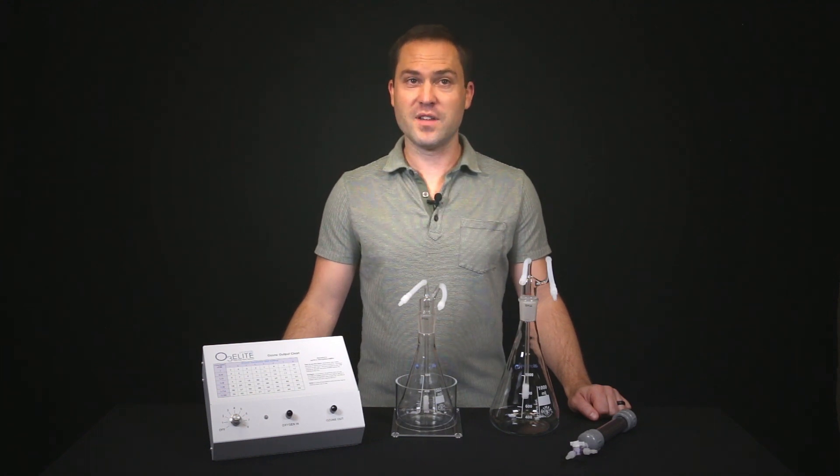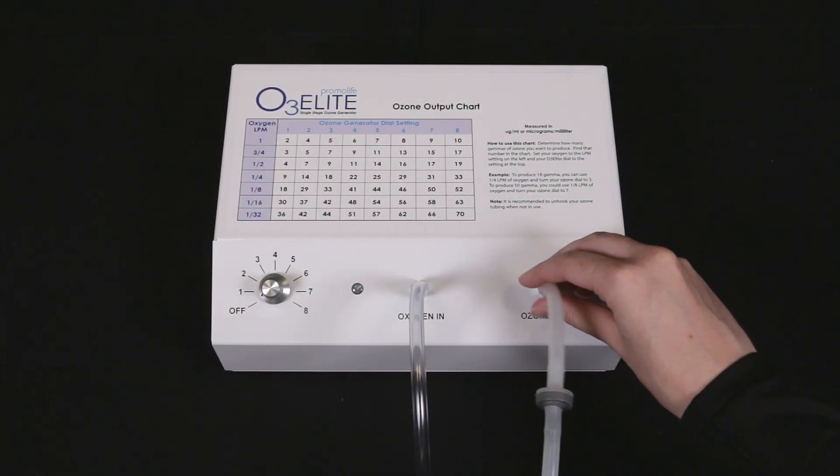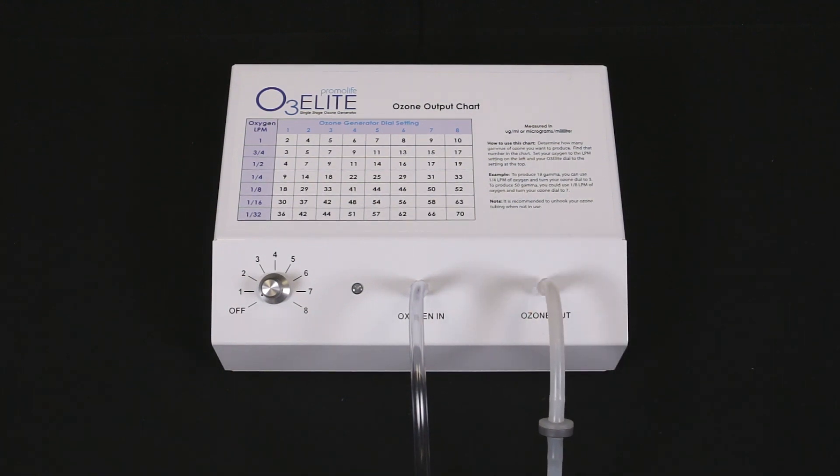Next, I will go over the connections that will apply to both sized jars. To start, you will need to connect the tubing with the check valve and attach tubing to the ozone outport of your ozone generator.